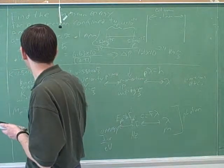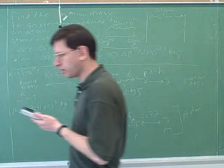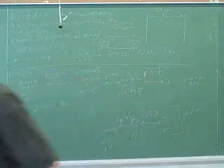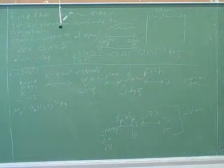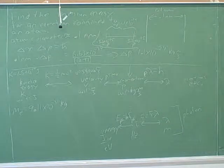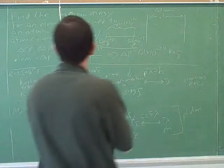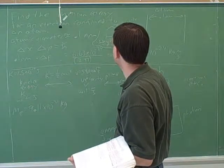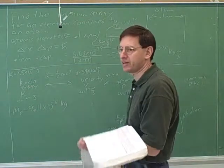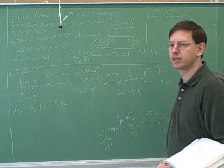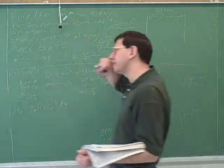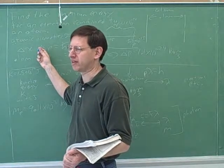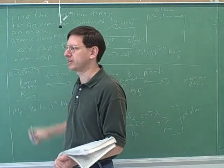What are the units on this? And that's our answer. All right, this is a pretty typical type of question, so let's review the steps. Find the minimum energy for an electron confined to an atom. The first thing we have to do is realize that this is an uncertainty principle problem — and that just comes from experience, so you know when to use the various ideas.